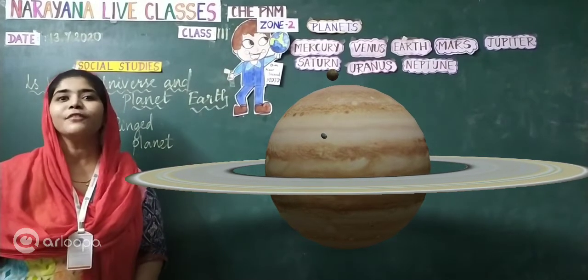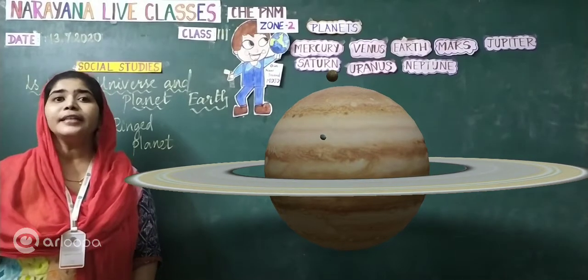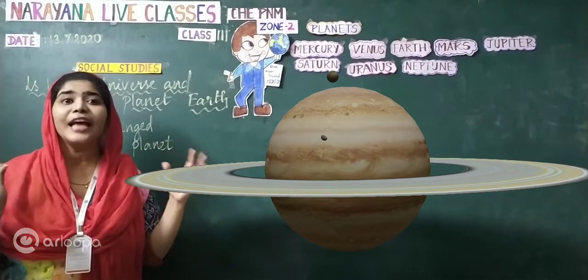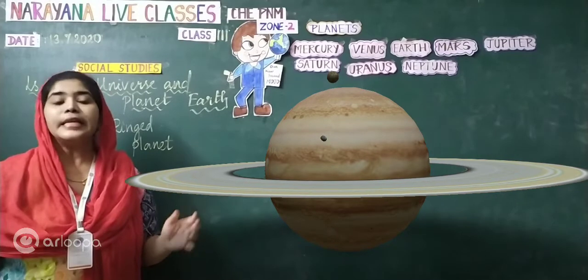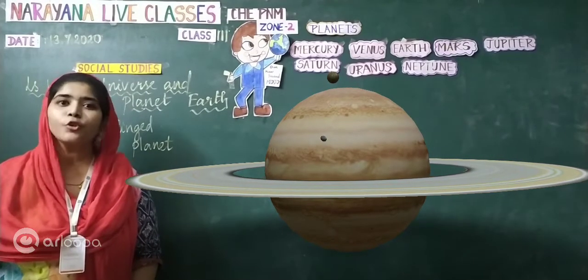Okay children. It is a very beautiful planet. And it is very big and as large as Jupiter. It is the sixth planet in the solar system.